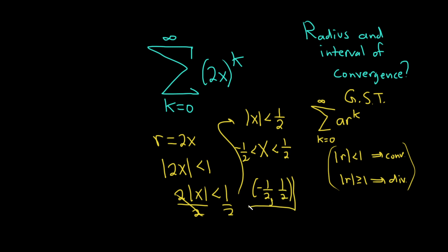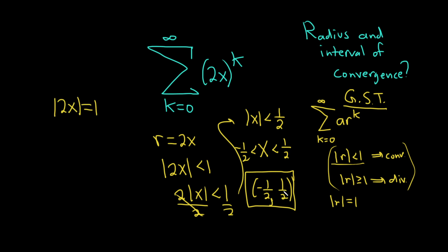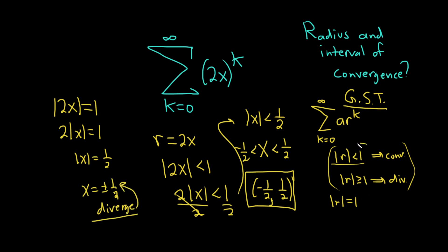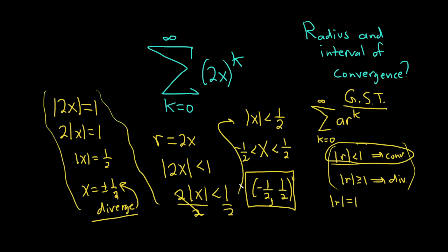If you're wondering whether you have to check the endpoints, the answer is no, because we used the geometric series test. It converges only when the absolute value of r is strictly less than 1, and for all other cases — in particular when the absolute value of r equals 1 — it will diverge. So the moral is that whenever you use the geometric series test, you never have to check the endpoints.